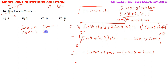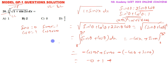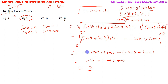Applying limits: at x equals pi by 2, cos 90 equals 0 and sin 90 equals 1; at x equals 0, cos 0 equals 1 and sin 0 equals 0. So the result is (minus 0 plus 1) minus (minus 1 plus 0) equals 1 plus 1 equals 2. This is how you solve the model question paper questions.